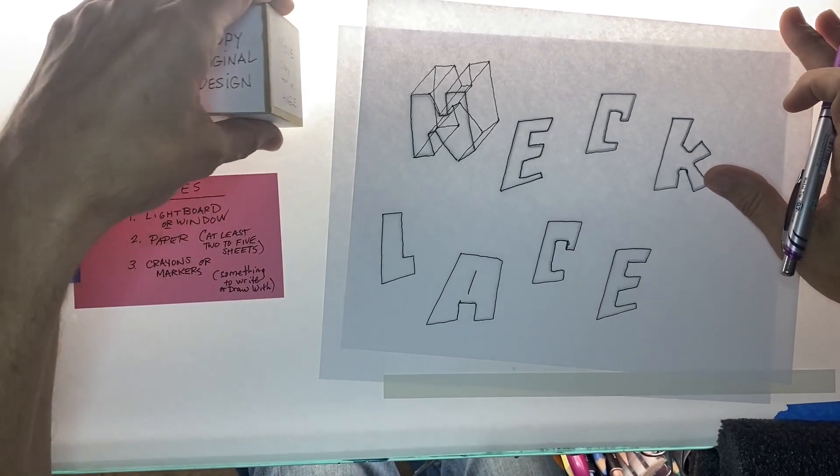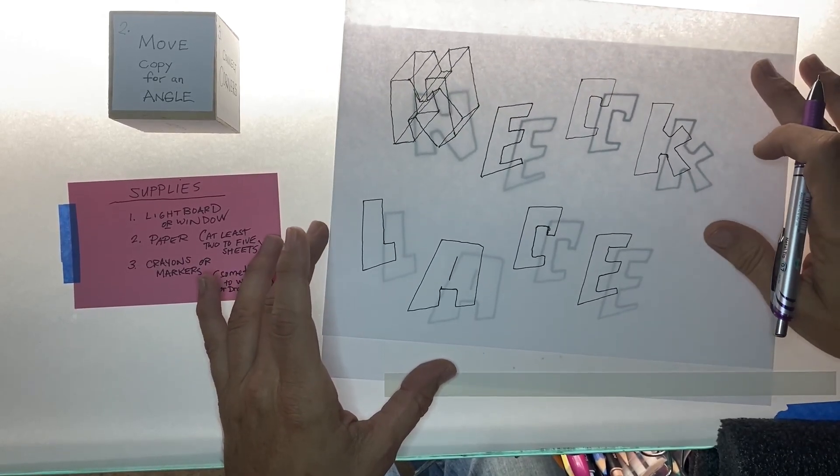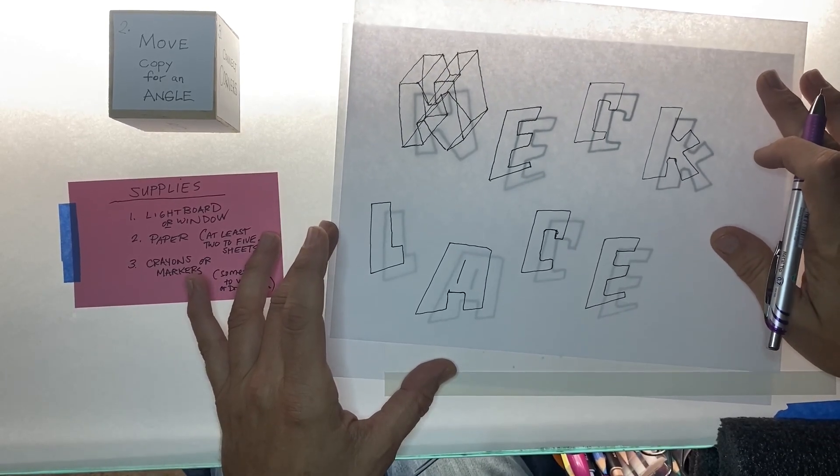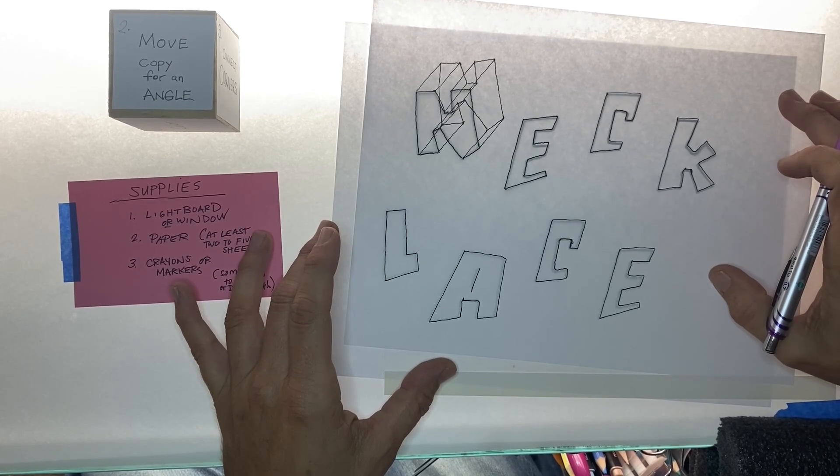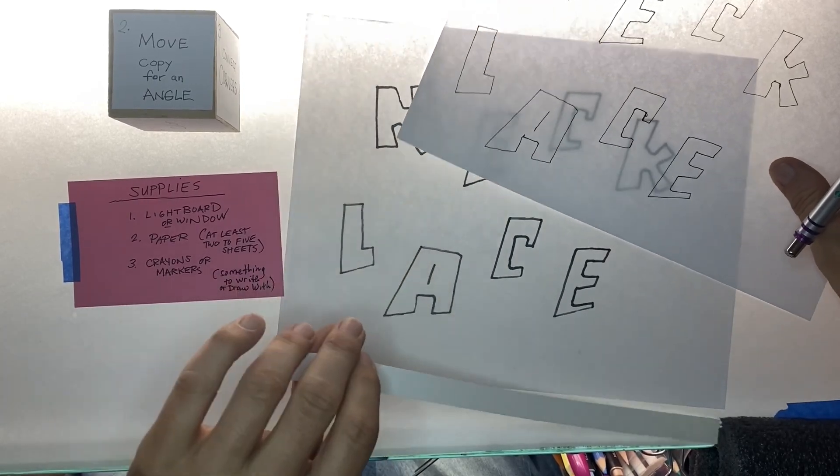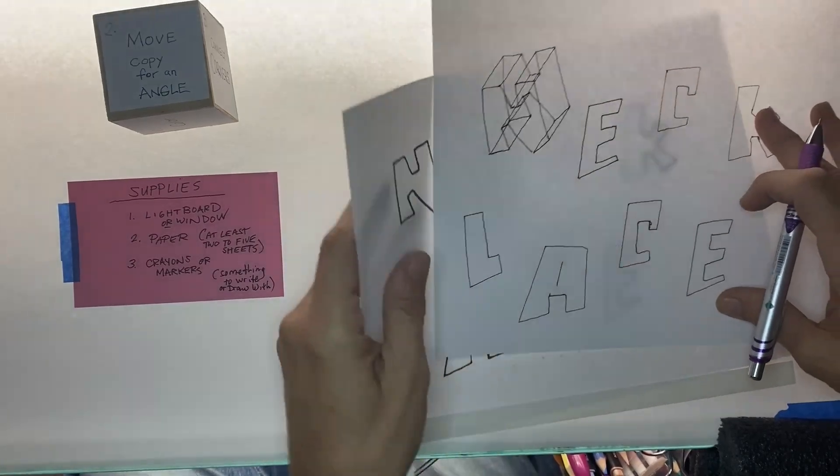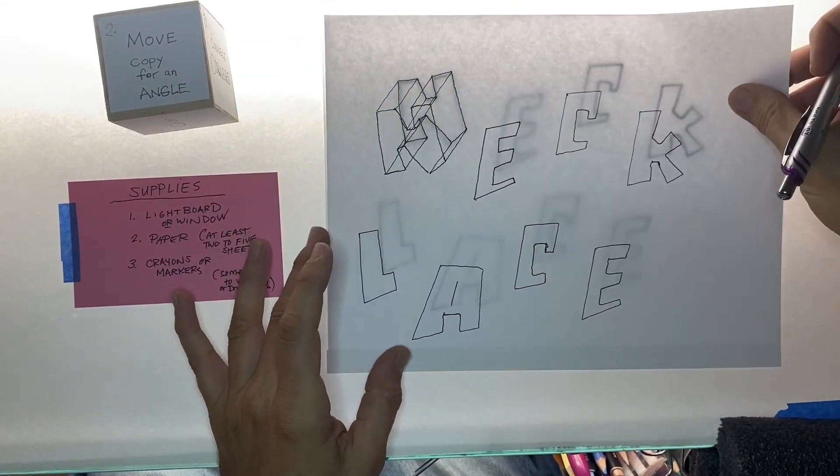Because step two, move copy for angle, we're just going to move it around. And yeah, you see all the letters move around. That's the nice thing about this process. If you space them out right and they're linked together with the original beneath it, and I'm using a clear transparency sheet to protect my original image as well as the surface of my drafting table.